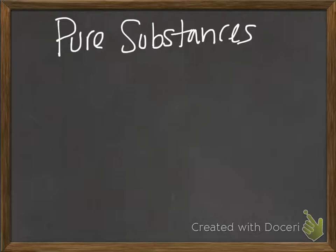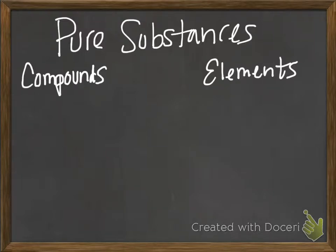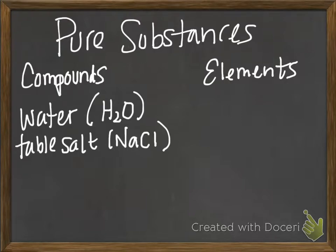So now let's talk a little bit about pure substances before we leave this tutorial. There are also two broad categories of pure substances: compounds and elements. Remember, a pure substance can't be physically separated — if it can be separated at all, you have to use chemical means. Compounds are things which are made up of more than one element, like water (H2O) or table salt (NaCl). You can't physically separate the hydrogen from the oxygen in water, and you can't physically separate the sodium from the chlorine in table salt — it would require a chemical reaction.